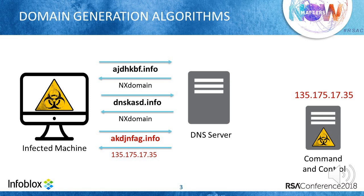Modern malware uses domain generation algorithms, known as DGAs, to dynamically generate domain names and bypass domain blacklisting. The algorithm will generate a large list of domains in which only a few will correspond to registered malicious domains. DGAs usually rely on random states of input, making it hard to predict which domains are going to be generated, becoming almost impossible to create a blacklist.